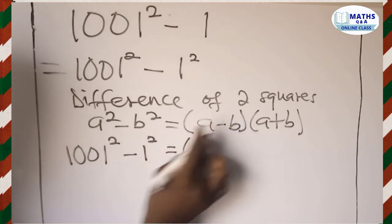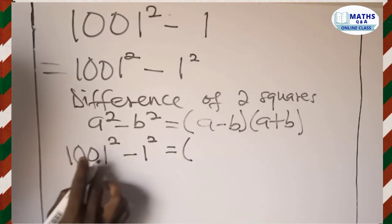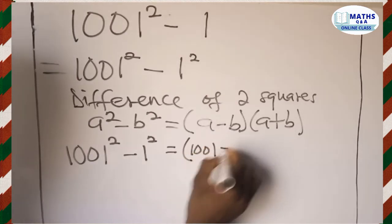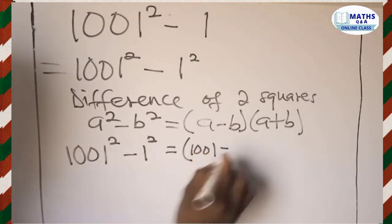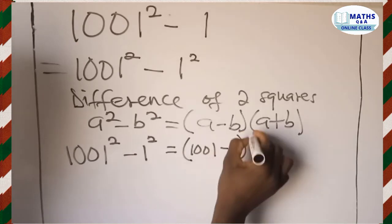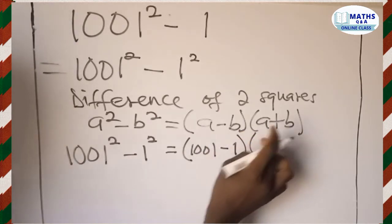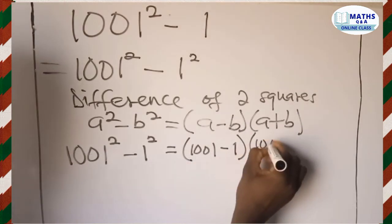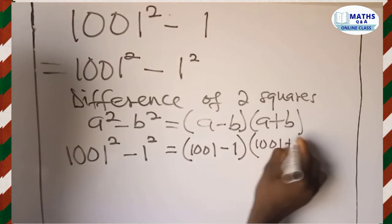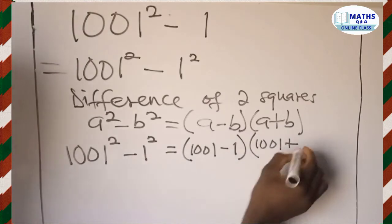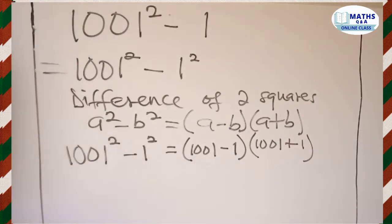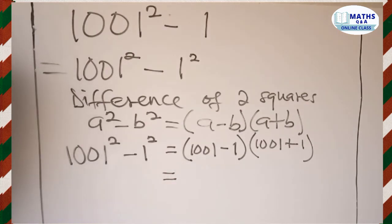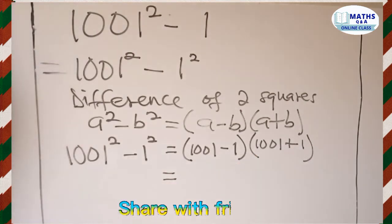That is equal to: in place of a we write 1001, so (1001 minus 1), close the bracket, then open the next bracket — in place of a we write 1001 again, so (1001 plus 1), and then close the bracket.